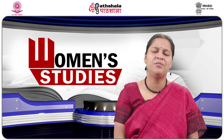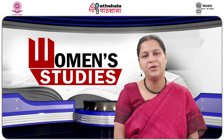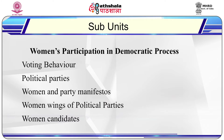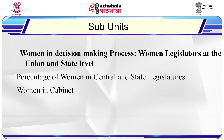We will begin with a brief history of political participation of women in the pre-independence period. The sub-units of this unit will cover: reasons for low political participation of women; women's participation in democratic process, including voting behavior, political parties, women and party manifestos, women wings of political parties, and women candidates; and women in decision-making, including women legislators at union and state level, percentage of women in central and state legislatures, and women in cabinet.